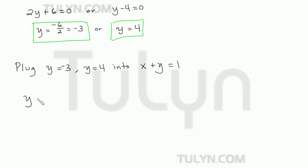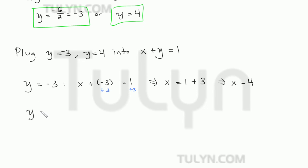So when y is equal to negative 3, then x plus negative 3 is equal to 1, which means that x is equal to 1, adding 3 to both sides, plus 3. So x is equal to 4. And then when y is equal to 4, x plus 4 is equal to 1. So x is equal to 1 minus 4, which means that x is equal to negative 3.